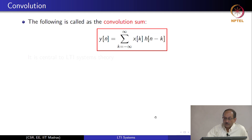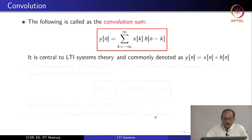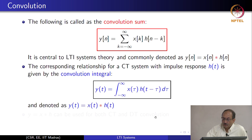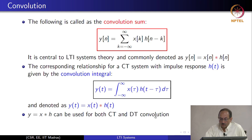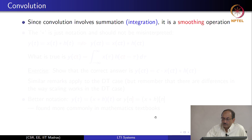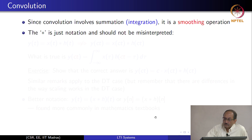This is called the convolution sum. The corresponding counterpart for CT systems is the convolution integral, and this is very central to LTI systems theory. It is denoted as x(n) * h(n). This stands for the convolution, and the continuous time counterpart is denoted x(t) * h(t). The notation x * h is used for both CT and DT convolution. Since convolution involves summation or integration, it is a smoothing operation.